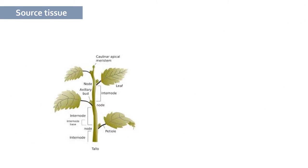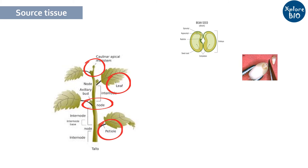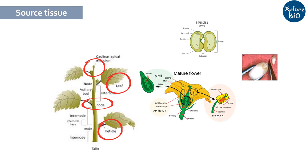Nodal segment, root and shoot apical meristems, cotyledons, embryo, leaf, petiole, anther, ovary, and stem are some of the most commonly used explants. Now let's see which type of explant is suitable for a particular tissue culture application.